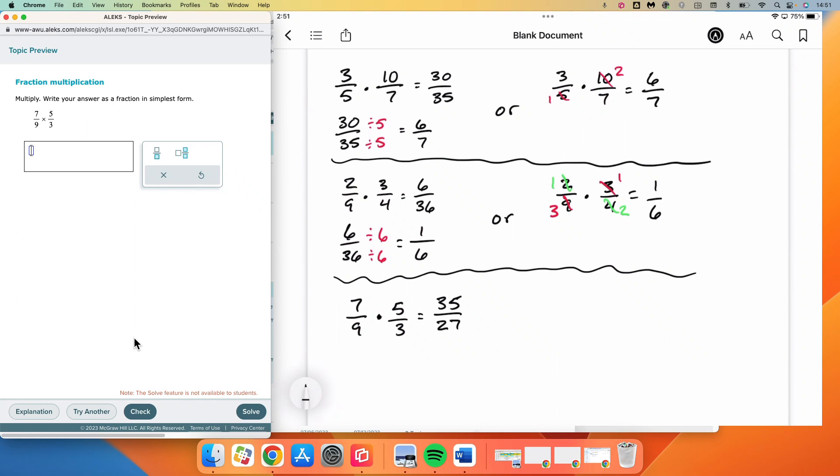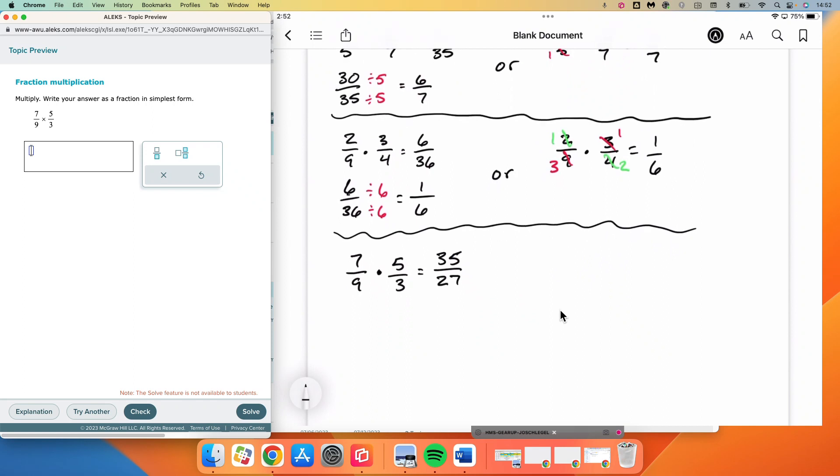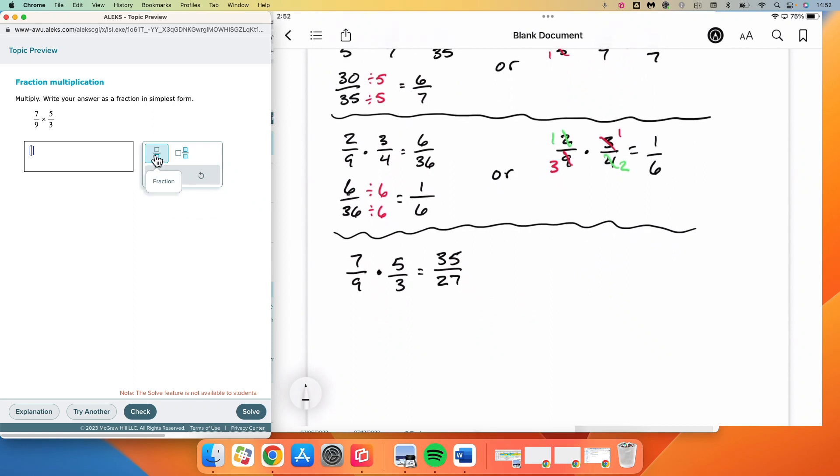Now, if we were to try to do the cross-cancelling thing here, we would need to recognize that 7 and 3 do not have any common factors. Neither do 9 and 5. So there is not going to be a cross-cancelling demonstration here because that's already in simplest form, and there is nothing to cross-cancel. So 35 over 27 will be our fraction in simplest form.